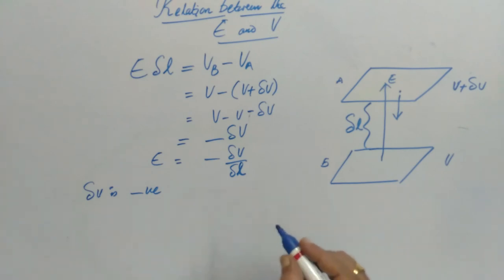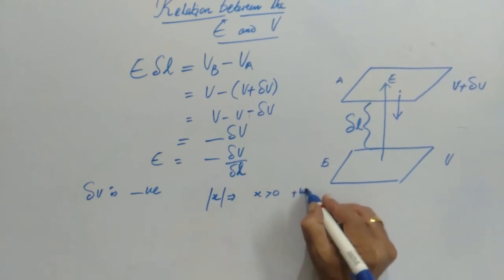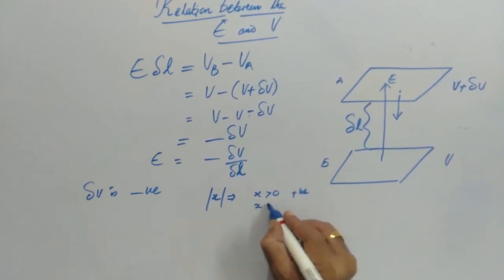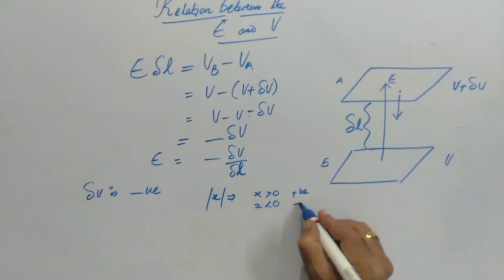We know the modulus function. If X is greater than 0, then we take positive X. If X is less than 0, then we take negative X.